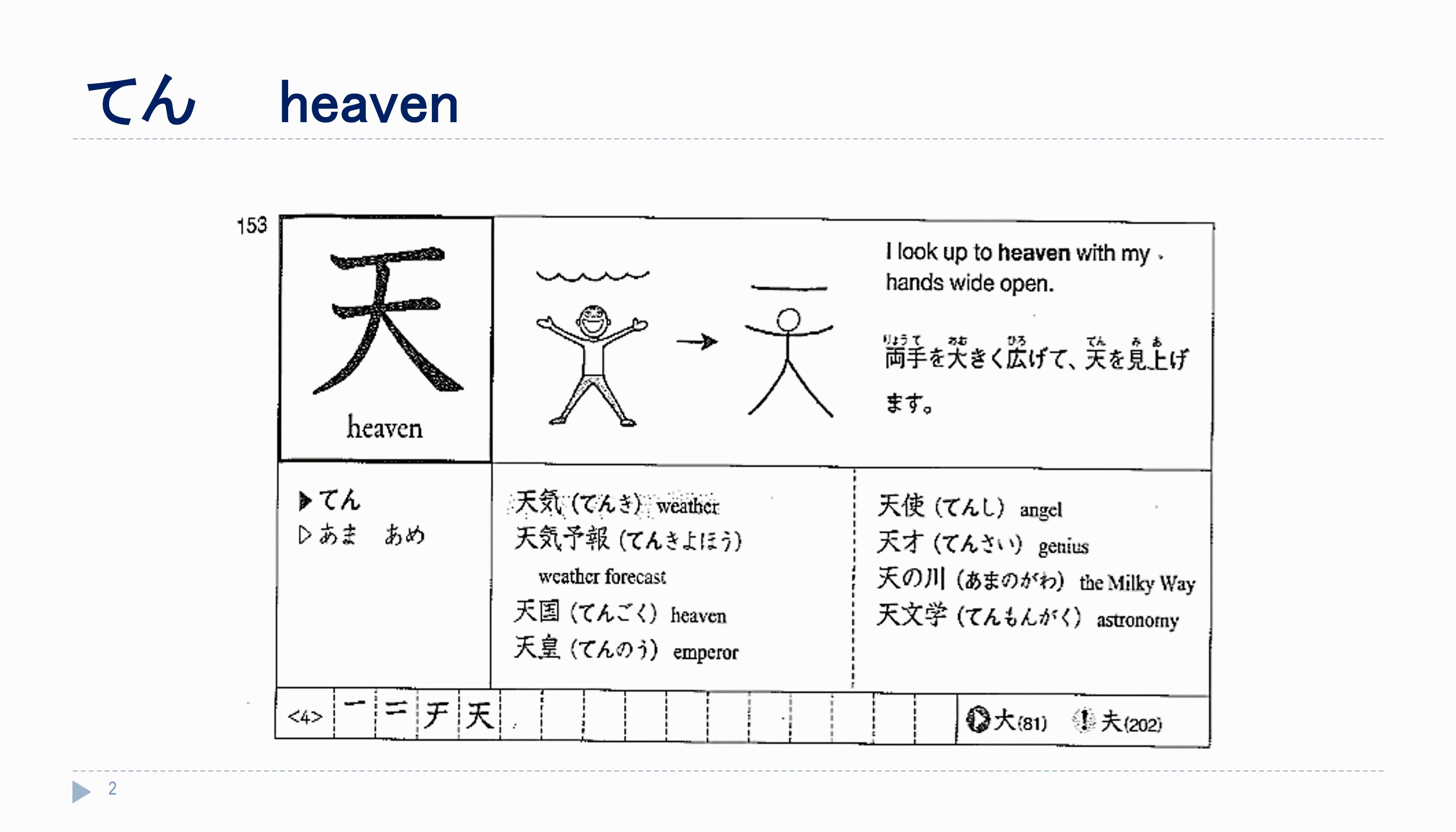Our first kanji for today is 天気の天. Together with 元気のき, it makes 天気. This is a very simple kanji.